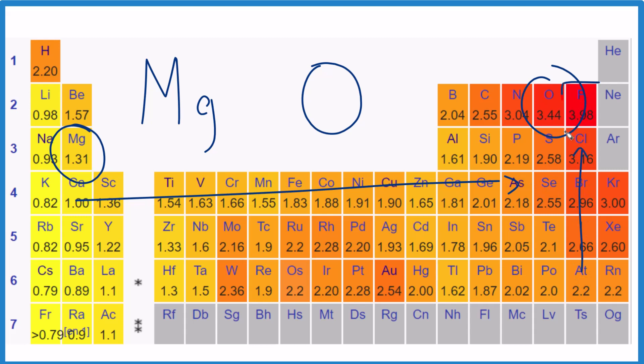And the most electronegative element on the periodic table is fluorine. So you can just see which one of these is closer to fluorine, and oxygen's right there.